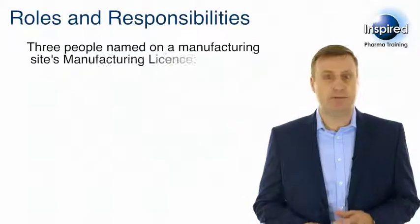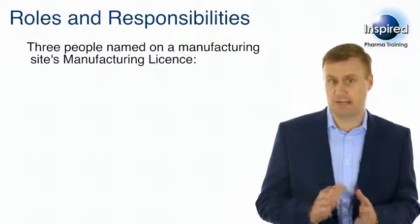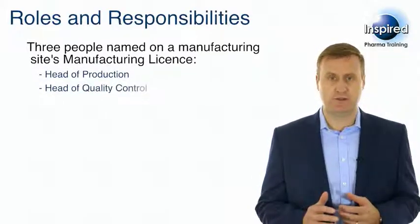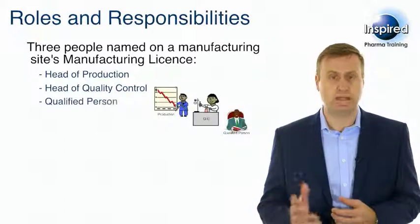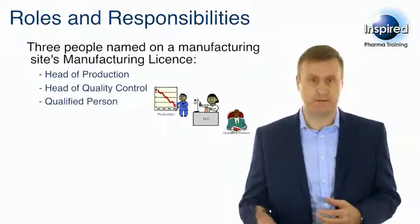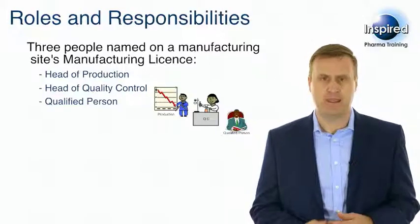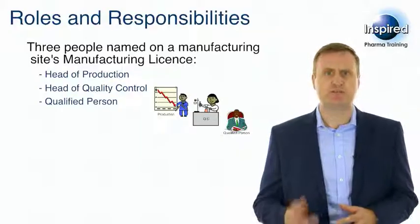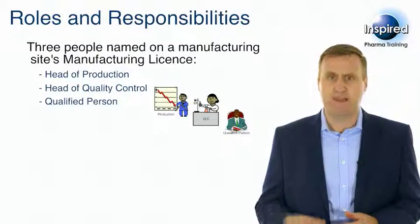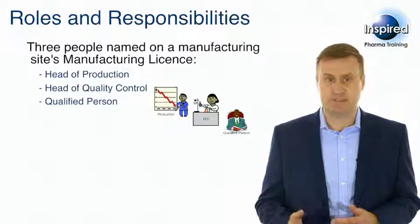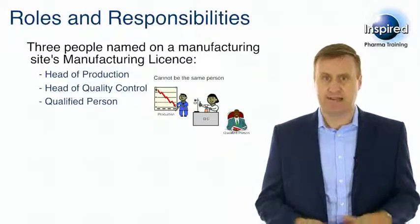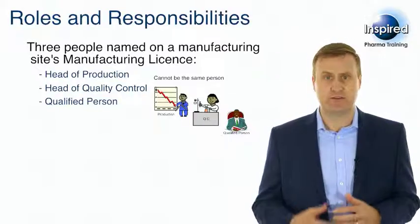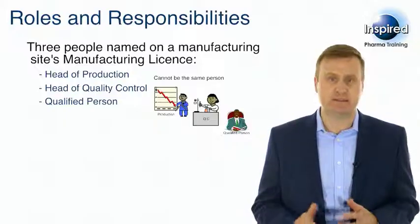The three people named on a manufacturing site's manufacturing licence are the Head of Production, the Head of Quality Control, and the Qualified Person or QPs, as you may have more than one qualified person. GMP and the Regulatory Authorities prefer these people to be in full-time positions.